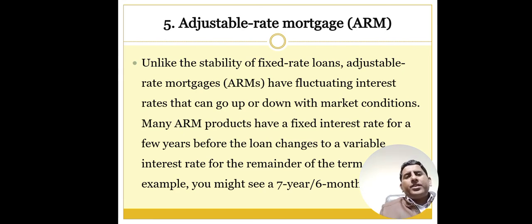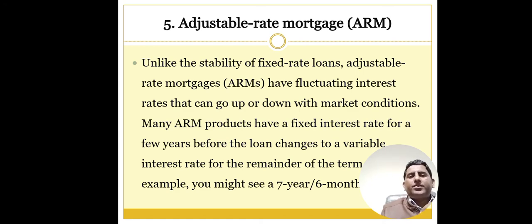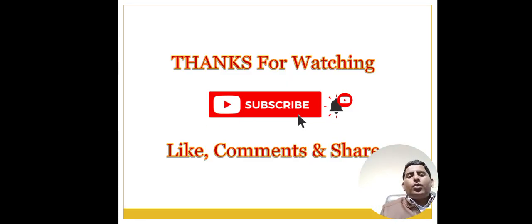Another type is the adjustable-rate mortgage, or ARM. Unlike the stability of fixed-rate loans, adjustable-rate mortgages have fluctuating interest rates that can go up or down with market conditions. Many ARM products have a fixed interest rate for a few years before the loan changes to a variable interest rate for the remainder of the term.